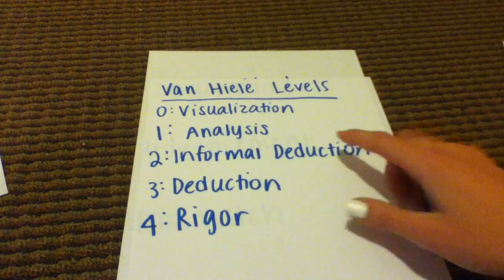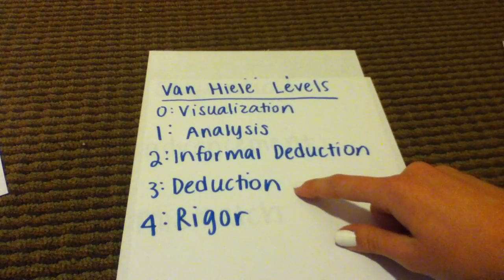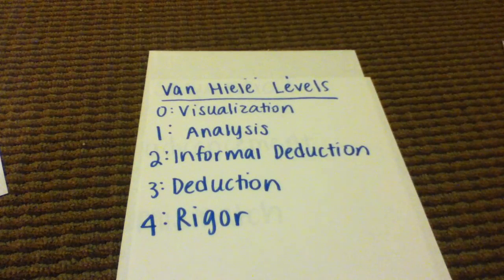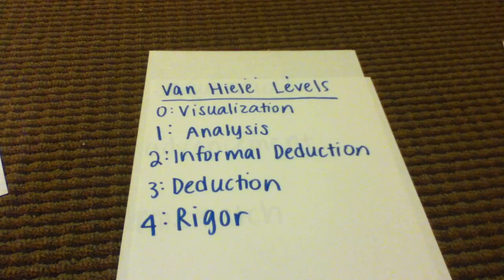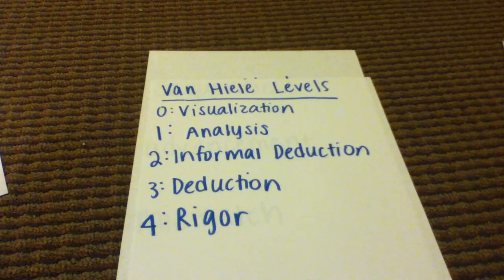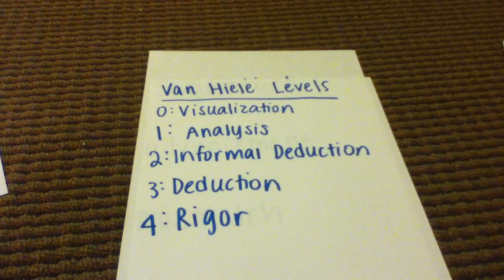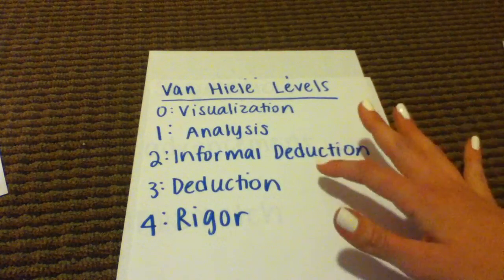Level three is deduction. It's usually reached in high school, and this is when students think about properties of shapes even more deeply and can construct proofs — not just memorize them. An example of something a level three student might say would be 'a circle's radius is perpendicular to the tangent at the point where it intersects.'